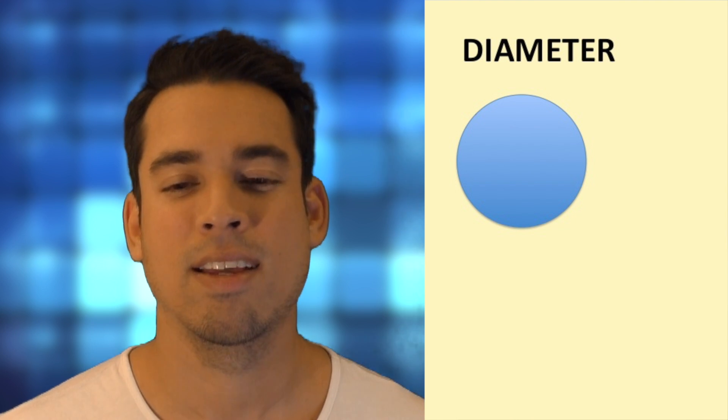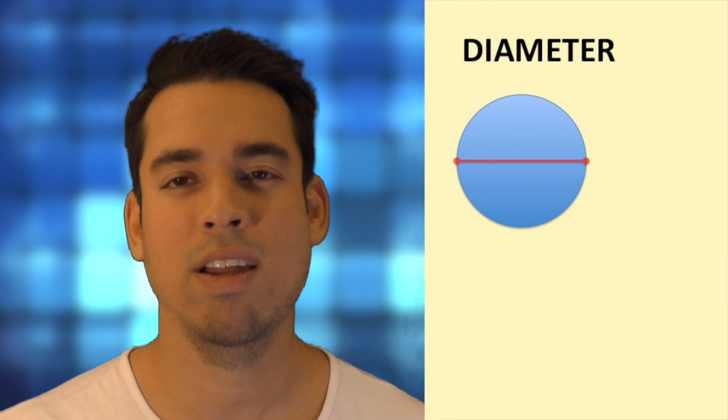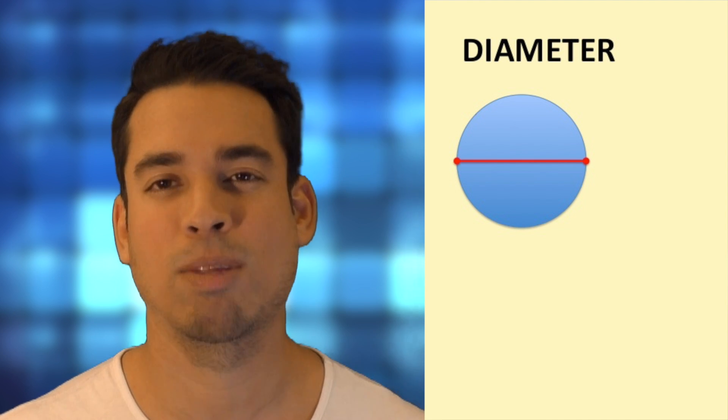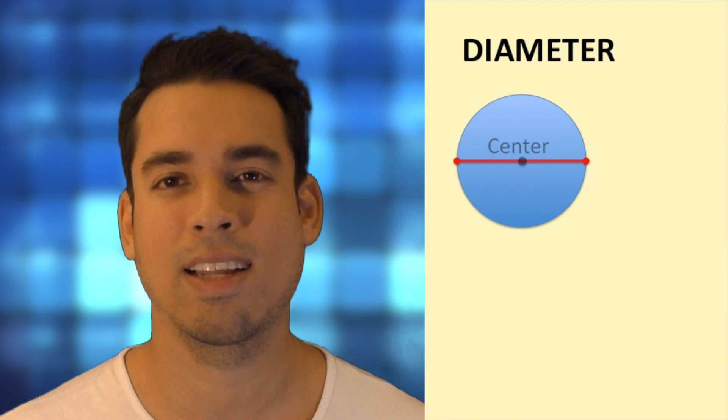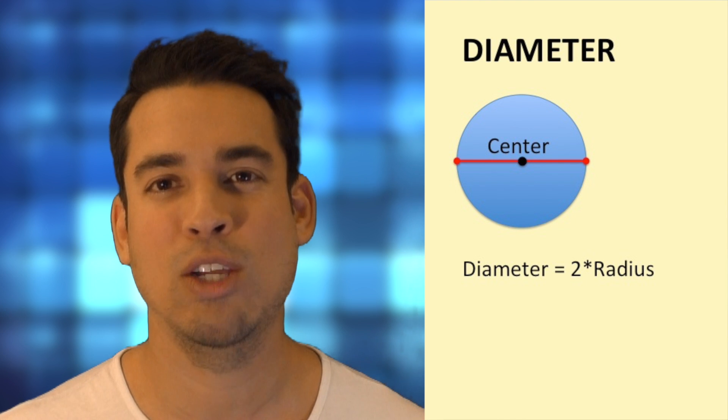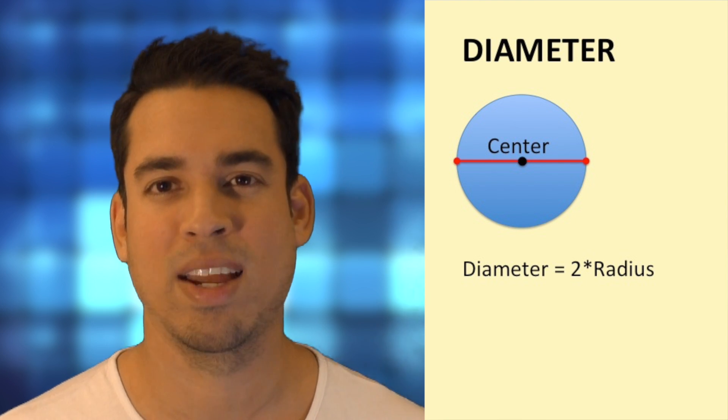The diameter is the distance from one edge to the other. So it's a line segment that goes from one edge to the other that goes through the center of the circle. And a quick rule to remember is that the diameter equals two times the radius.